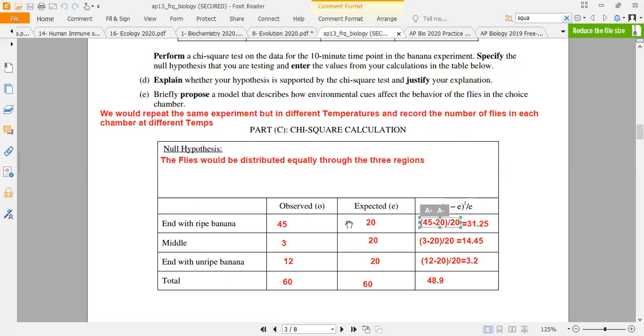I have 45 minus 20, which gives me 25, squared, divided by 20.